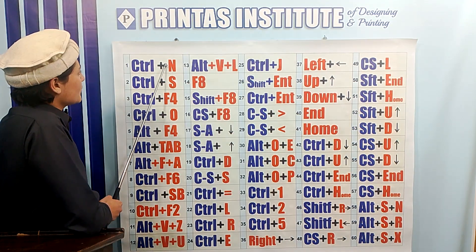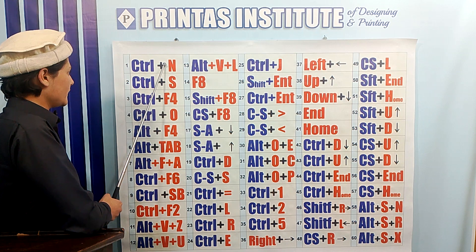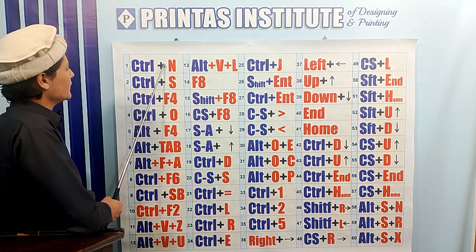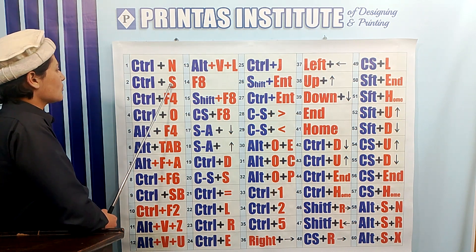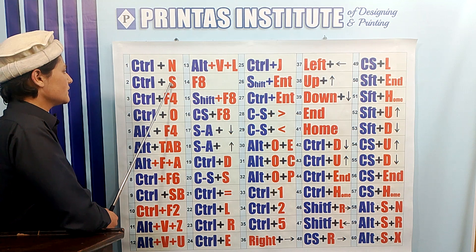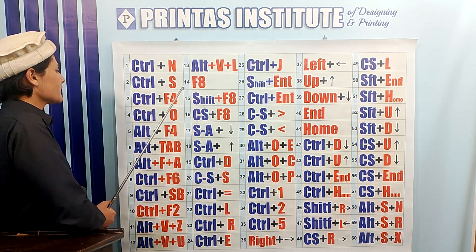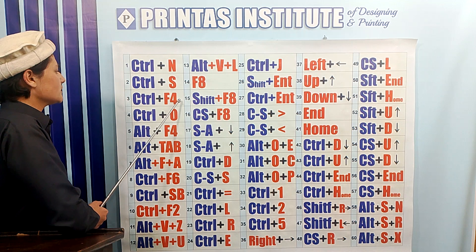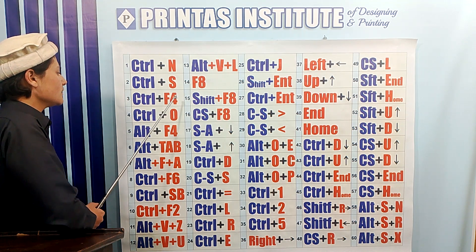Ctrl N is the first command of MS Word, which is used to create a new document in which we do our work. Ctrl S is used to save the document in which we have done our work. We can save the document with Ctrl S. Ctrl F4 is a command which is used to close the document.